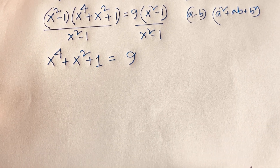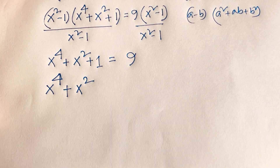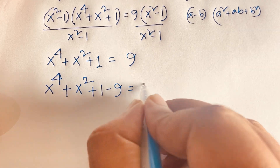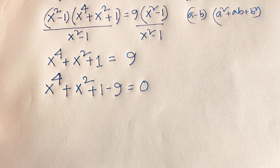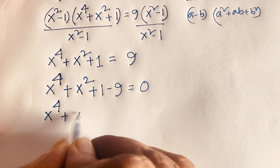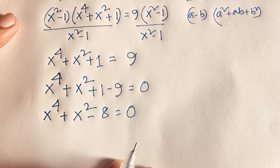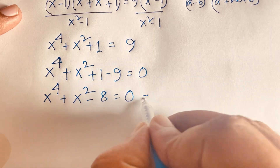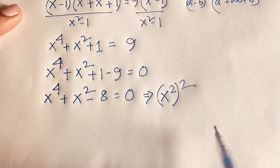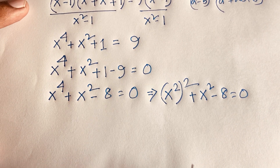Rearranging: x⁴ + x² + 1 - 9 = 0, which gives us x⁴ + x² - 8 = 0. We can write x⁴ as (x²)².